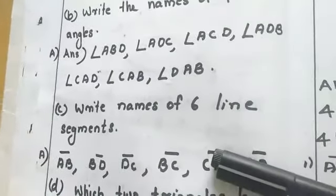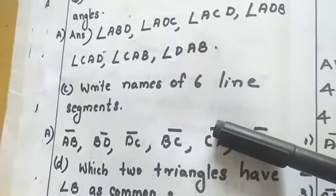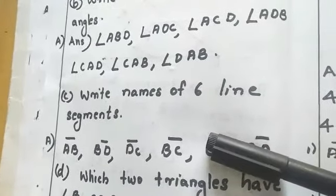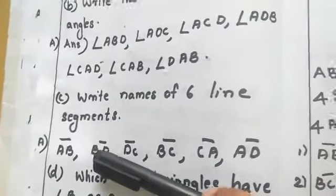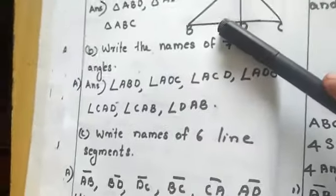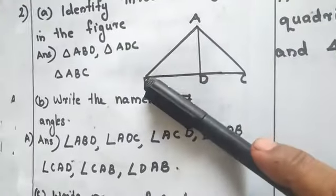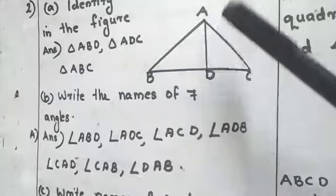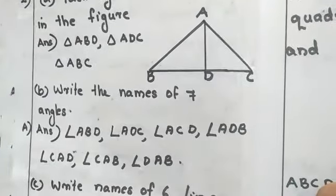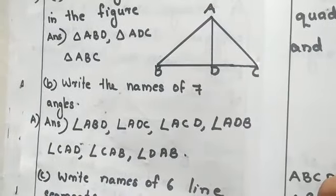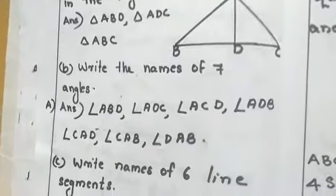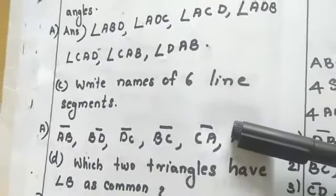Next question: write the names of six line segments. Line segments are represented using an overline. From this figure the six line segments are: AB, AD, AC, BD, BC, and DC.